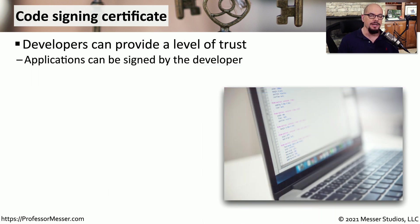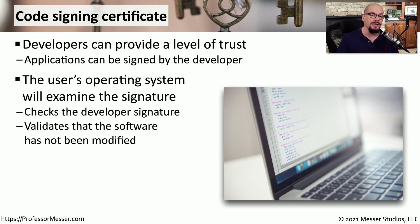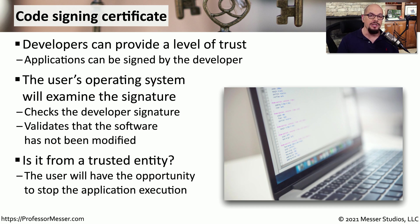Another use of digital certificates is in distributing software. A developer will create an executable or piece of software, then sign it with a code signing certificate. This means we can receive that software, install it, and during installation validate that the program is exactly the same executable as the one distributed by the manufacturer. If the software fails this validation check, we have the option to continue with the installation or stop and determine why the code signing certificate did not properly validate.